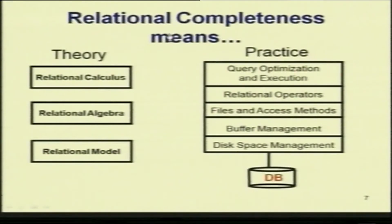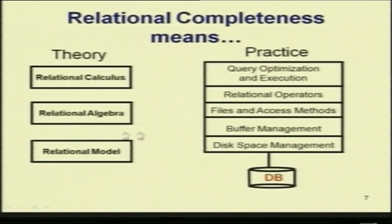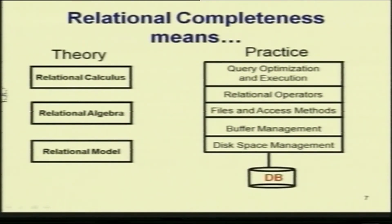Relational completeness means that for theory it should be relational calculus or relational algebra. Relational calculus can be in two forms: tuple or domain relational calculus. In practice you also have memory management, buffer management, access methods, relational operators based on one of these formal models, and query optimization and execution. If you have all of this together, then you call it relational completeness.